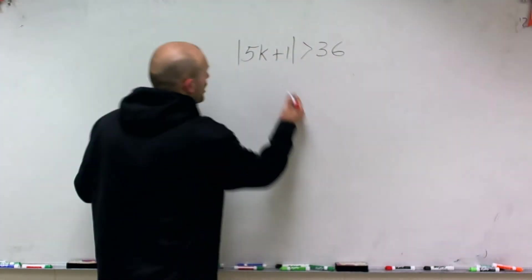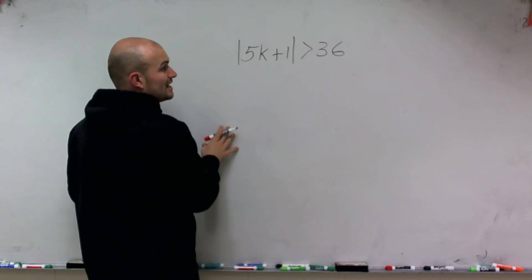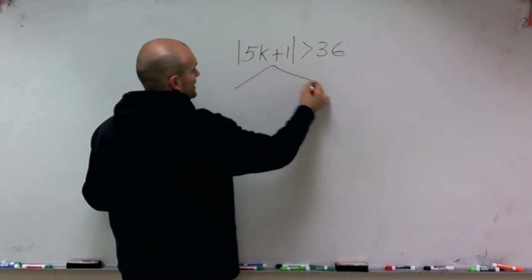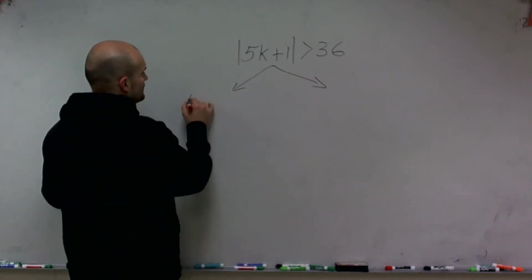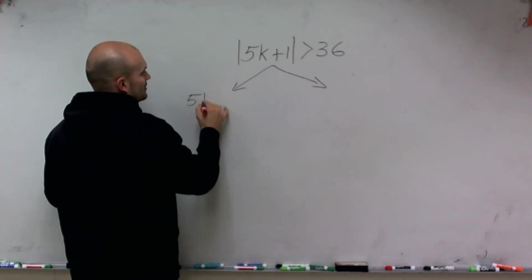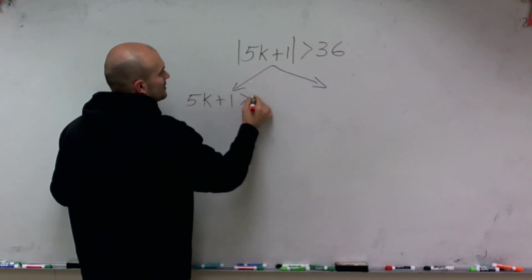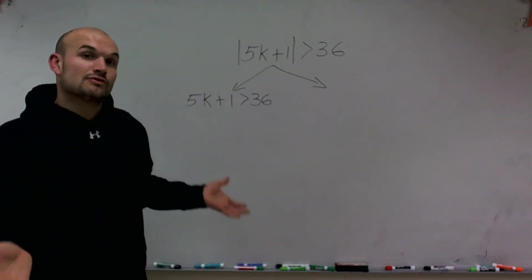So to do that, all I simply do is make sure that I have my absolute value isolated, and then I'm going to represent both of the solutions. So the first one, I can just kind of eliminate my absolute value and just represent the positive solution. So I can say 5k plus 1 is greater than 36.